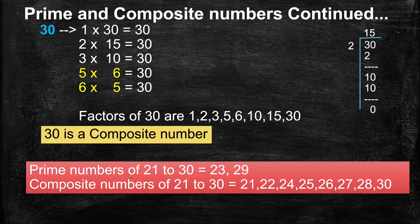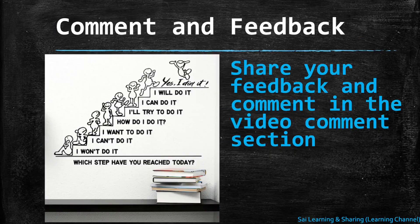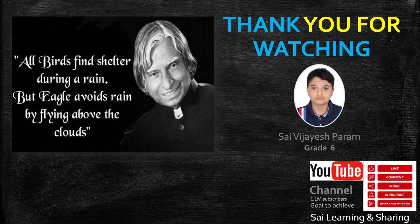Now we have identified the prime numbers from 21 to 30: 23 and 29. The composite numbers from 21 to 30 are 21, 22, 24, 25, 26, 27, 28, and 30. I believe you understand about prime numbers and composite numbers. Thank you for your support and please see my other videos in the description below. Please share your feedback and comments in the video comment section. That is it for today's video. Thanks for watching.